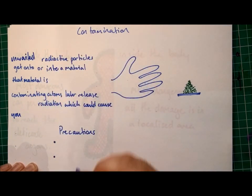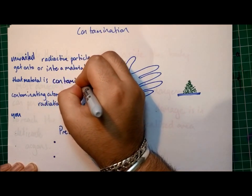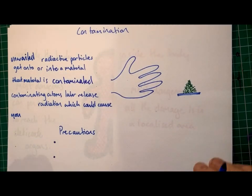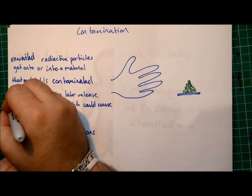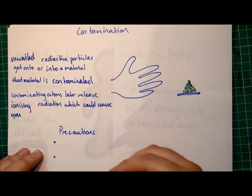We then say that that material is contaminated. Those contaminating atoms later release ionising radiation which could cause you harm.